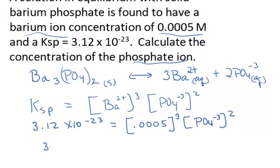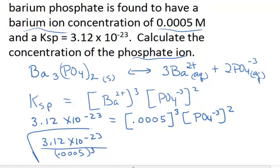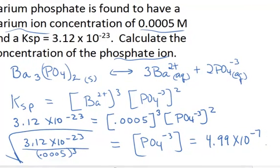So 3.12 times 10 to the negative 23rd divided by 0.0005. That number would be cubed. And then take the square root of that entire quotient and you'll get the phosphate ion concentration. And it equals 4.99 times 10 to the negative 7 molar.